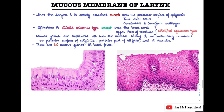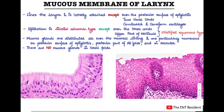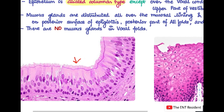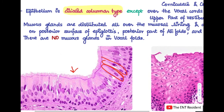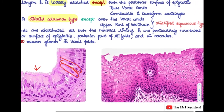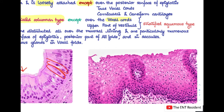Last for this session is the mucous membrane of the larynx. The mucous membrane lines the larynx and is usually loosely attached, except over the posterior surface of the epiglottis, the true vocal cords, and the corniculate and cuneiform cartilages, where the attachment is very tight. The epithelium lining the larynx is mostly ciliated columnar epithelium, which is the predominant lining of the larynx, except in some particular places.